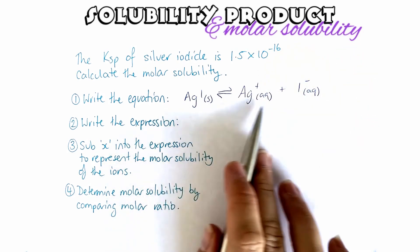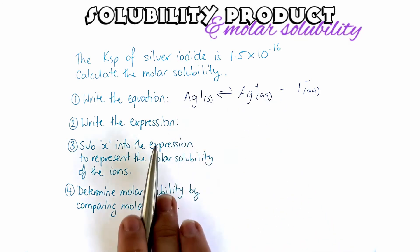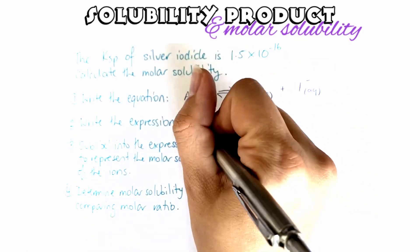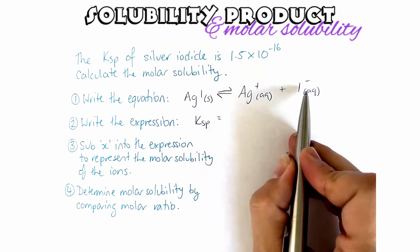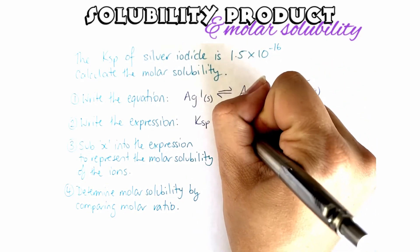And that is already balanced. The expression for Ksp is our concentration of our ions multiplied.